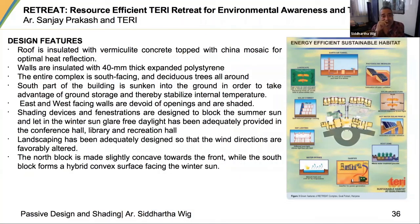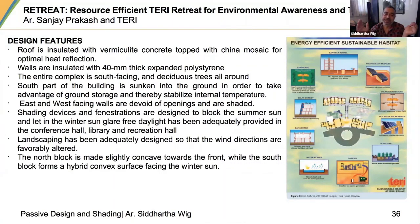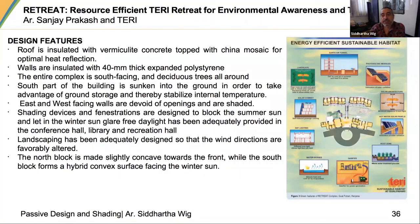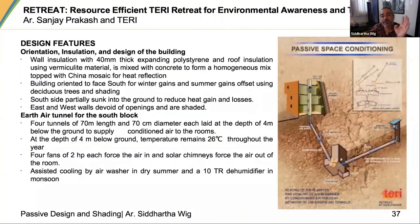Once demand was reduced, they looked at alternate ways to generate energy at site. The roof was insulated with vermiculite and had china mosaic on top to increase reflection. There was expanded polystyrene in the walls. Part of the building was sunken into the ground. East and west — in composite Delhi climate — are difficult due to low sun. Shading devices were properly designed; landscape used deciduous trees to allow winter sun in while blocking summer sun.